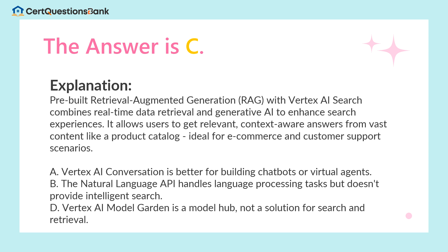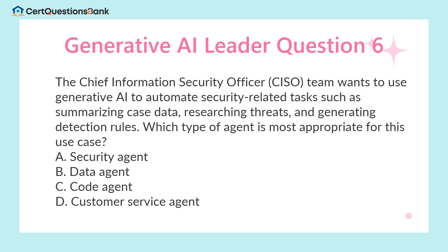Pre-built Retrieval Augmented Generation (RAG) with Vertex AI Search combines real-time data retrieval and generative AI to enhance search experiences. It allows users to get relevant, context-aware answers from vast content like a product catalog — ideal for e-commerce and customer support scenarios. Vertex AI Conversation is better for building chatbots or virtual agents. The Natural Language API handles language processing tasks but doesn't provide intelligent search. Vertex AI Model Garden is a model hub, not a solution for search and retrieval.